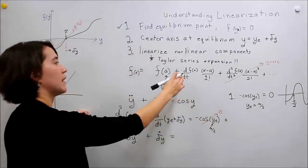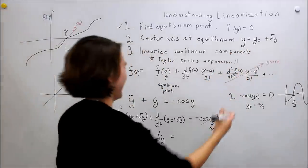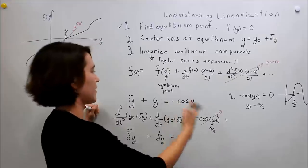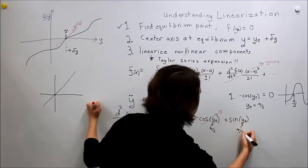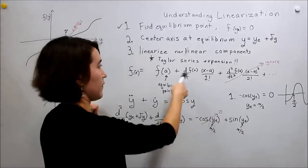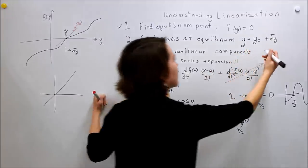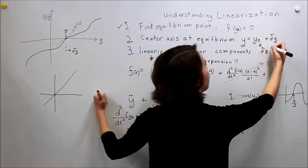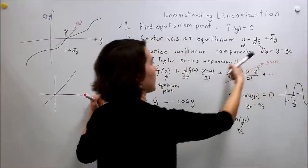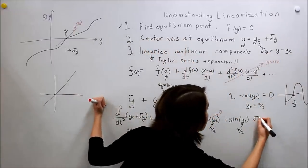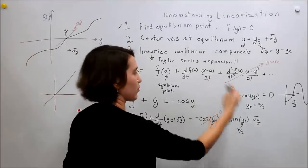That will always happen — if this term does not go away, something is wrong with your equilibrium value, so that's a good check. Next, we take the derivative of our function evaluated at a: the derivative of −cos is sine (two negatives), so we get sin(y_e) = sin(π/2). Then we have the (x − a) term: since δy = y − y_e = y − a, we can directly substitute δy there. The 1 factorial is just one.